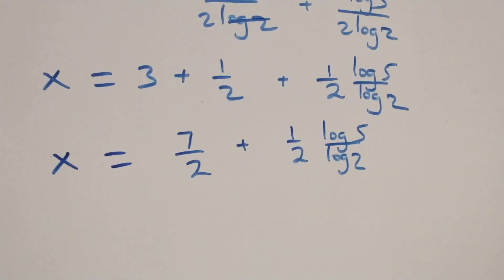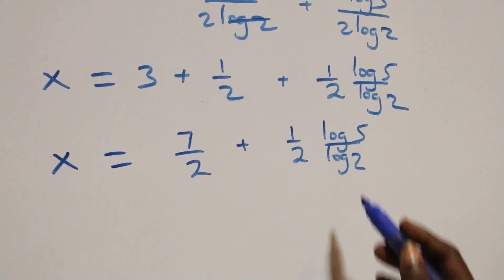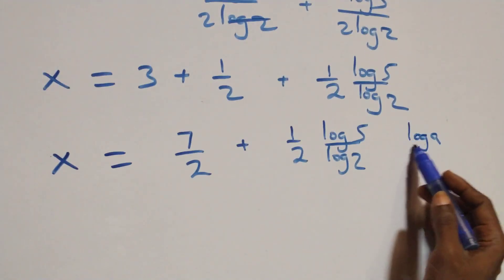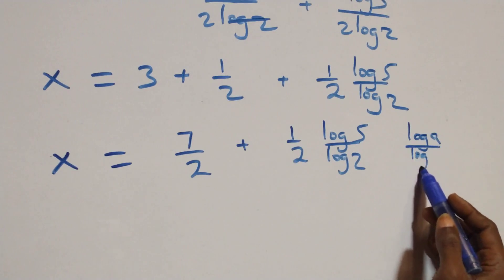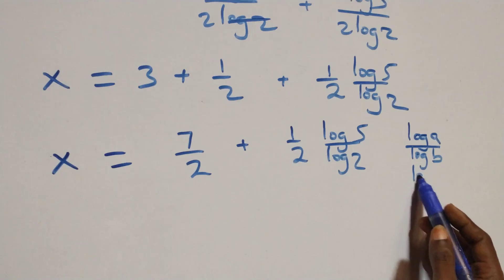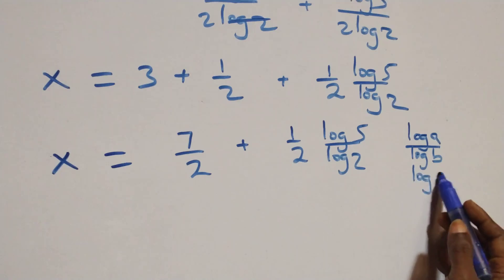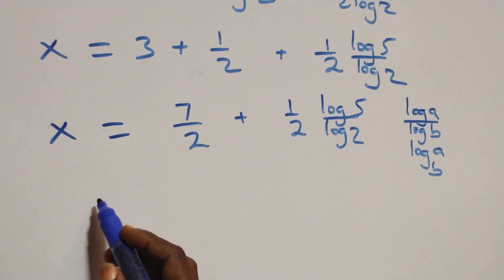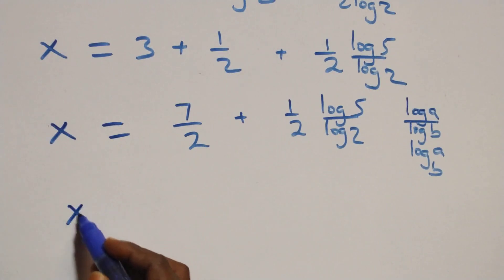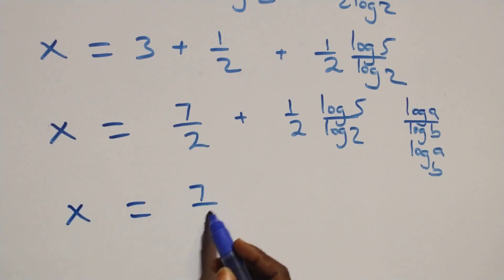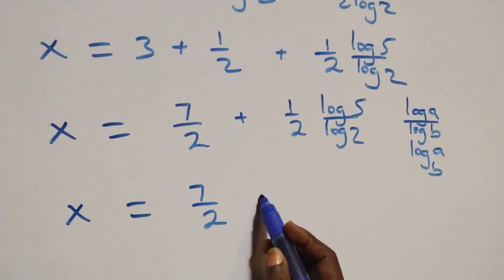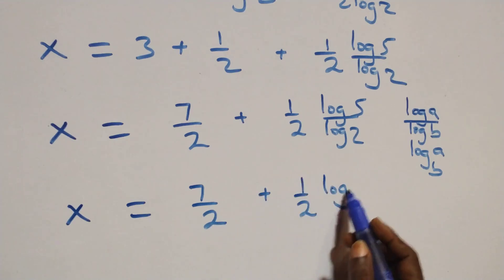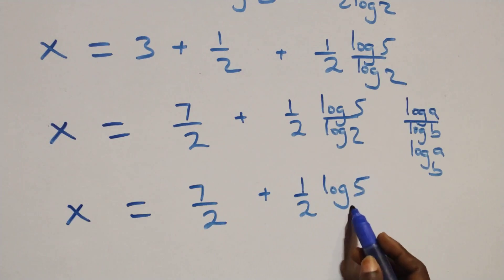Then here we apply the change of base rule. When we have log a over log b, this is the same thing as log of a to base b. So what we have becomes x equals to 7 over 2 plus (1/2)·log₂5.